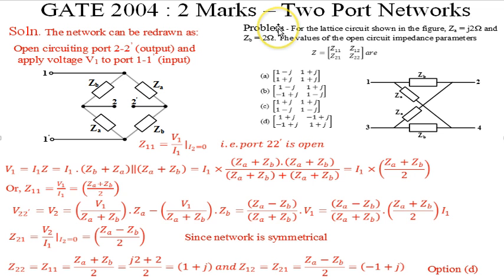We will read out the problem here. For the lattice circuit shown in the figure, Z_A is j2 ohms and Z_B is 2 ohms. The value of the open circuit impedance parameters Z11, Z12, Z21, Z22 - this matrix is any one of the following, and the corresponding lattice network is given here.